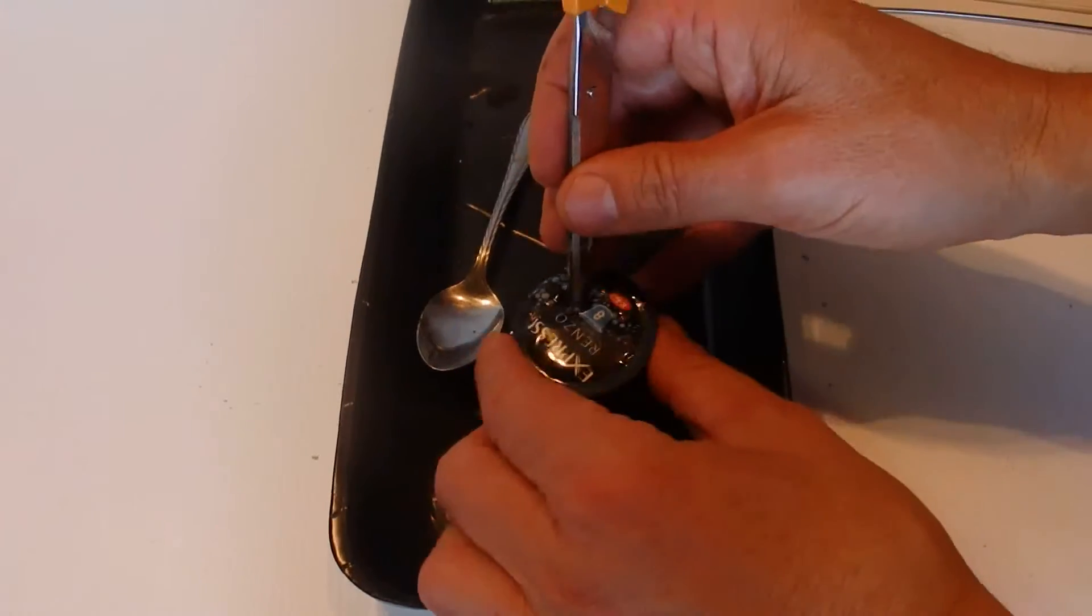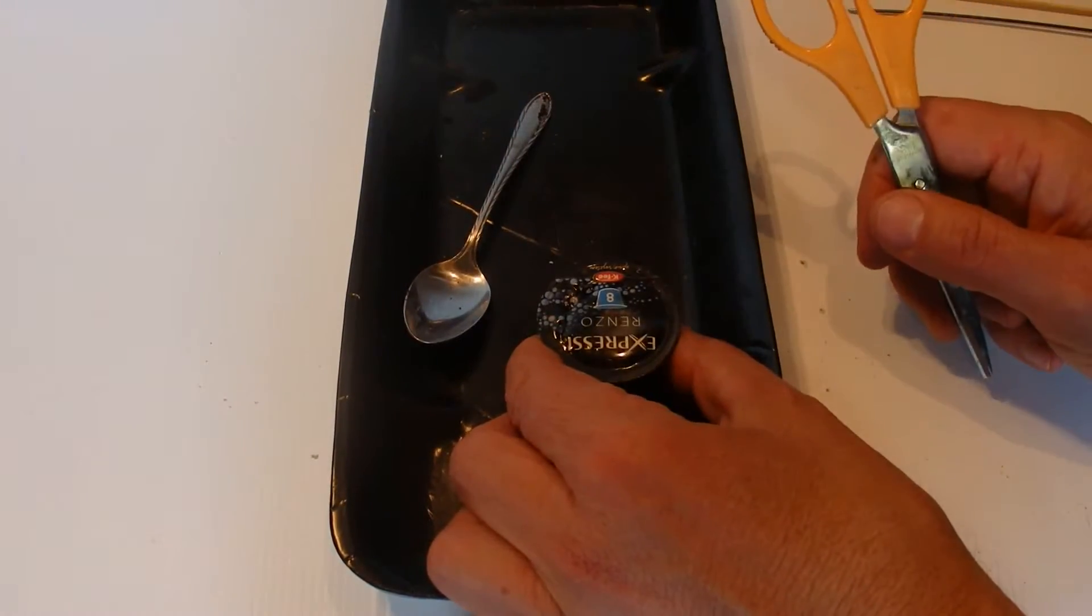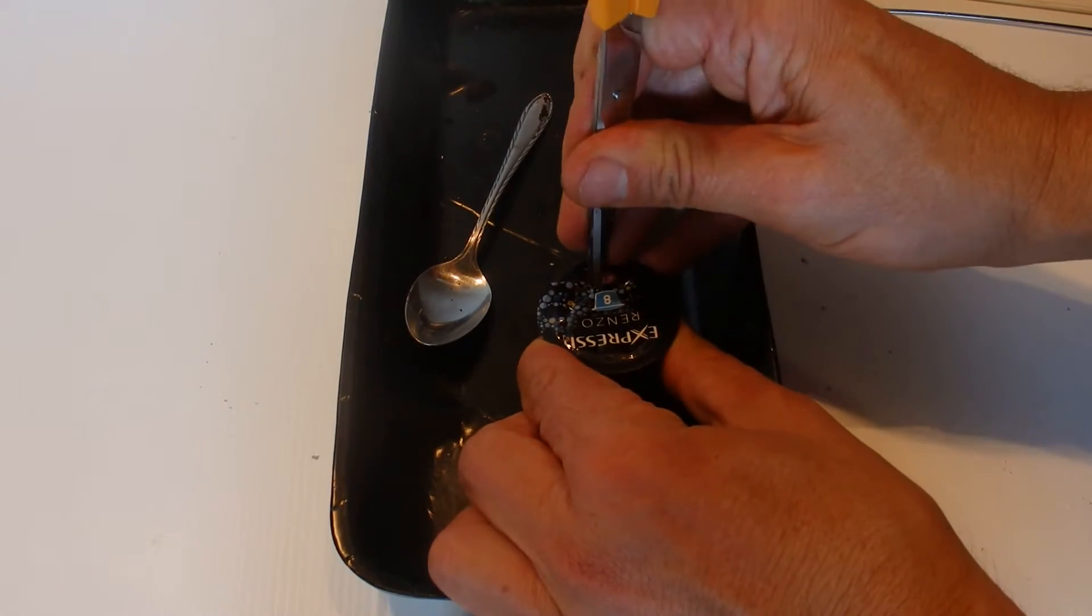Get some scissors and just need to take off that plastic sheet that's on the top of the coffee pod.